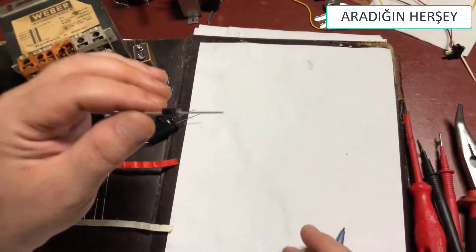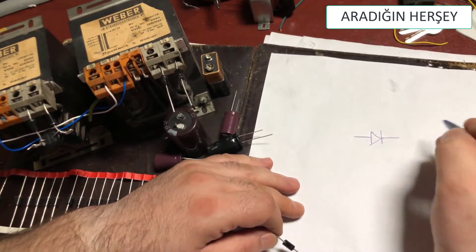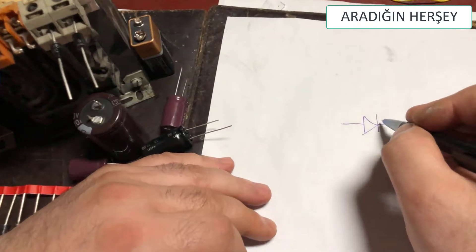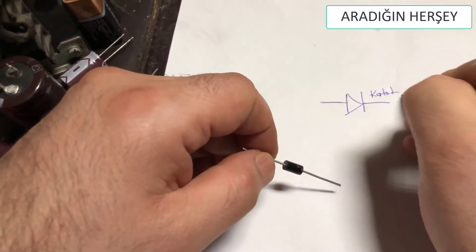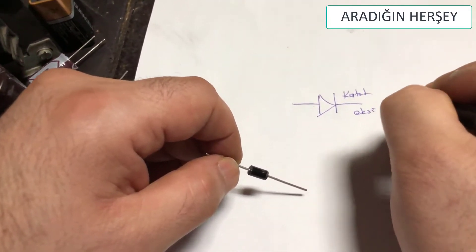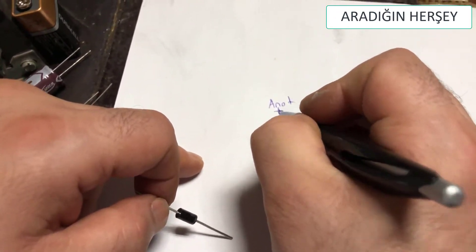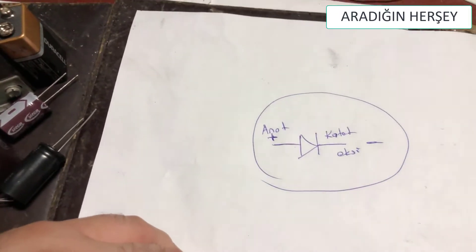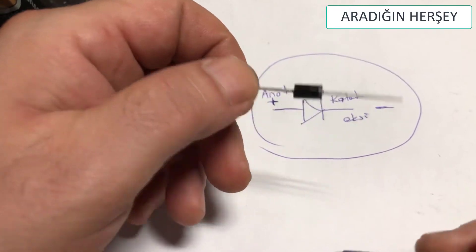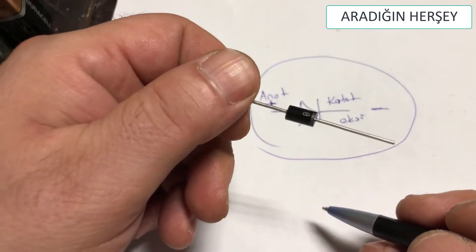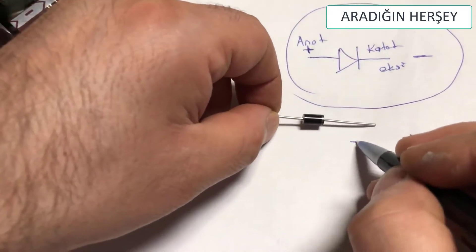Bu simgeye geldiğinde dik çizgi katottur, yani diyotun beyaz kısmı olan yer katottur. Sol tarafındaki yatay çizgi ise anottur. Bizim simgeyle işimiz yok arkadaşlar; bizim için en önemli pratik yöntem, uygulamada diyotun beyaz kısmı artı, siyah kısmı eksidir.